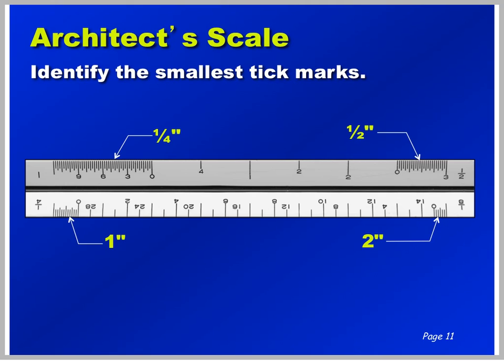We just identified what the smallest tick marks mean on the reference scale. Now let's learn what the high and the low zero marks mean and which scales they go with. We have a low zero and a high zero. The low zeroes always go with all the tick marks. The high zeroes only go with the high tick marks. Another way to look at it: the low zeroes go with the smaller scale and the high zeroes go with the larger scales.